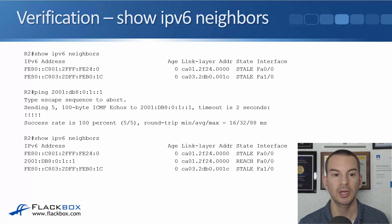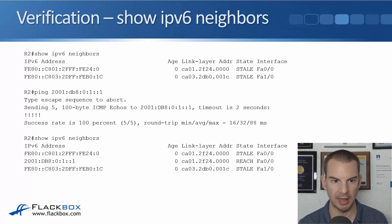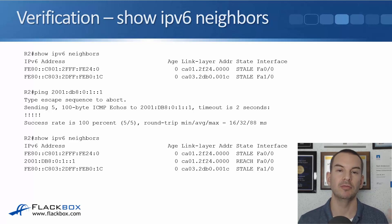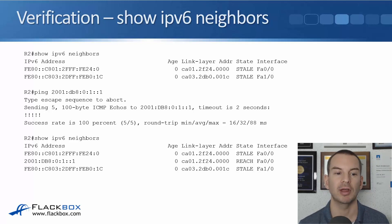So if I go on R2 and first do show IPv6 neighbors, it doesn't see R1's global unicast address. But if I then ping R1's global unicast address to generate some traffic and do a show IPv6 neighbors again, you can see in the diagram that it can see the link-local address on R1, the link-local address on R3, and it also reports the global unicast address on R1 now, because we had some traffic going to it.